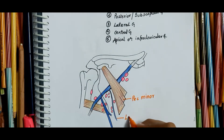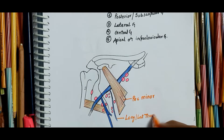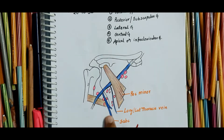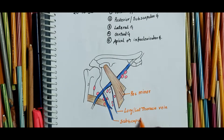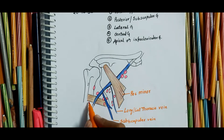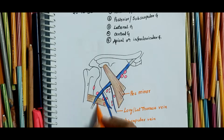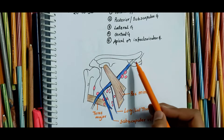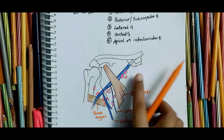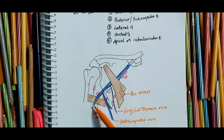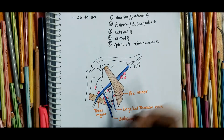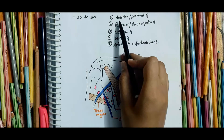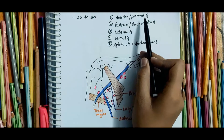Now coming to the in-depth explanation. This muscle is the pectoralis minor muscle, this vein is the lateral thoracic vein, this vein is the subscapular vein, this muscle is the teres major, and this is the axillary vein, which is the continuation of the subclavian vein and continues as the basilic vein.